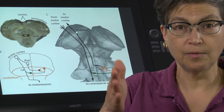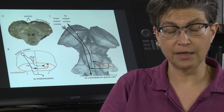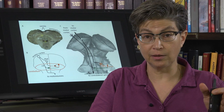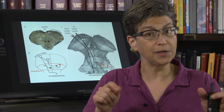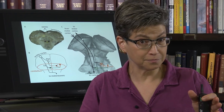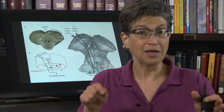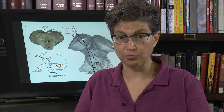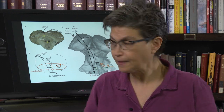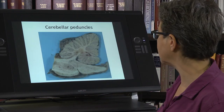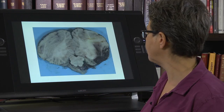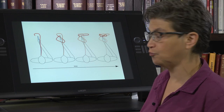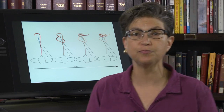The bottom line is that damage to the cerebellum or to the peduncles is going to affect ipsilateral movement — movement on the same side. Now, what type of effect is it going to have on ipsilateral movement?